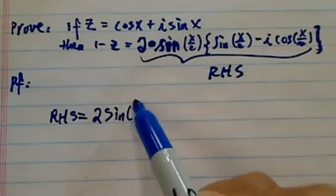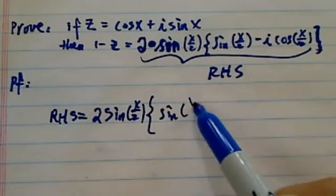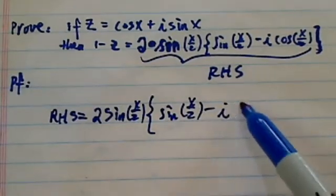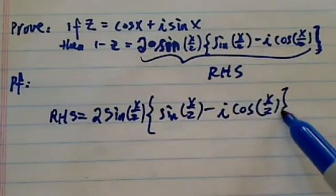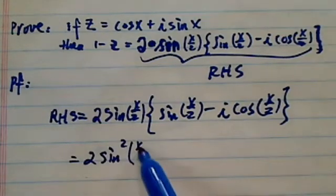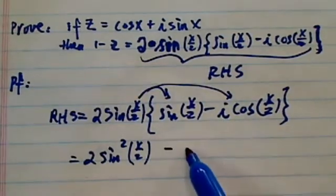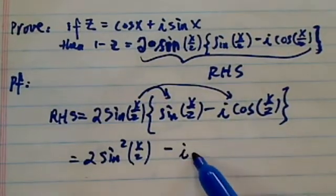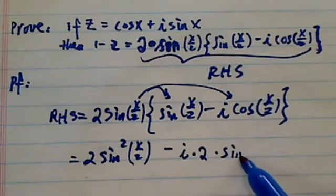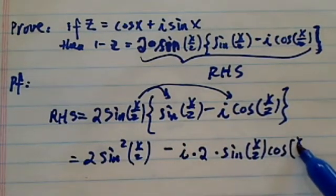So you have sine of x over 2 times this whole thing of sine of x over 2 minus i cosine of x over 2. Let's distribute. So you have sine squared x over 2. So I'm just distributing in there. Minus i times 2 times sine x over 2 cosine x over 2.